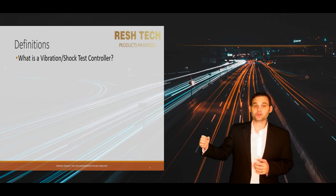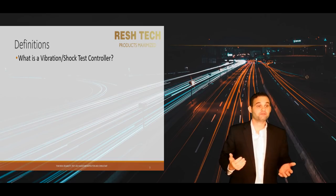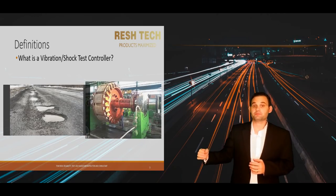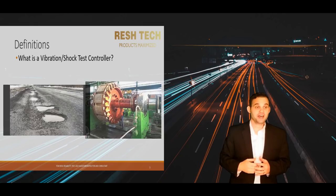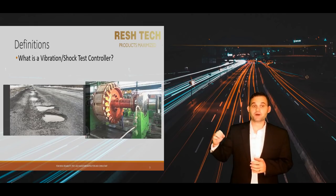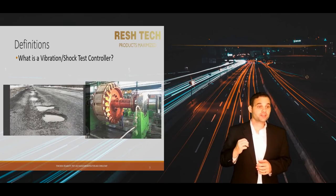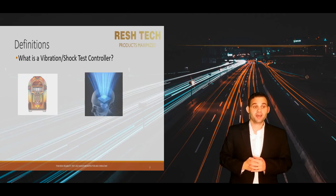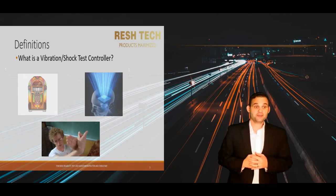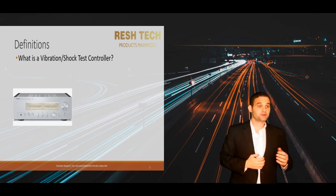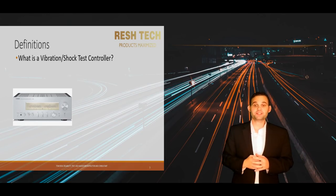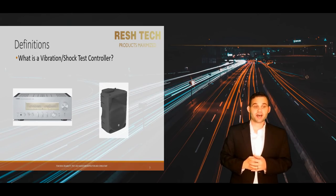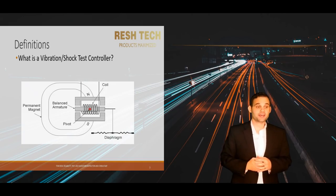A vibration and shock test controller is used to produce simulations of environmental and system-generated vibration and shock excitations. As discussed in part 1 of my two-part series, you can think of the controller as part music player, part your brain, and also your hands. The vibration test amplifier is like a stereo amplifier, and the vibration test system is like a giant loudspeaker, which has similar components such as a field coil and an armature.